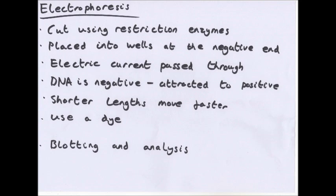You treat the DNA samples with restriction enzymes to cut them into fragments. The DNA samples are placed into wells cut into the negative electrode end of the gel. The gel is immersed in a tank of buffer solution and an electric current is passed through for a fixed period of time, usually around two hours. DNA is negatively charged because of the phosphate groups, so it's attracted to the positive end. DNA fragments diffuse through the gel towards the positive electrode, and shorter lengths of DNA move faster. Longer strands get caught up in the agarose gel and are slowed.